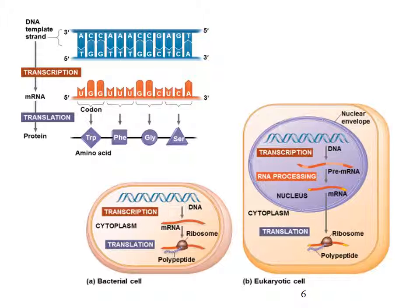In a bacterial (prokaryotic) cell, transcription and translation are not separated by a nucleus because there isn't one. However, eukaryotic cells have a nucleus, so transcription happens in the nucleus and translation happens in the cytoplasm. The RNA is actually processed in eukaryotes — you have pre-mRNA and then mature mRNA.